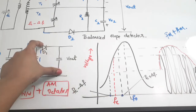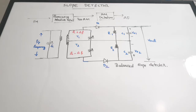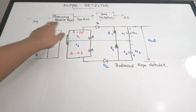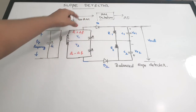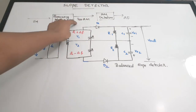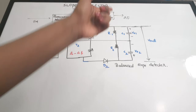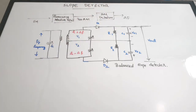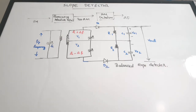Now let us see a more advanced version of this slope detector, which is called the balanced slope detector. We have seen that the basic slope detector has two blocks: a frequency selective network that produces an FM plus AM modulated wave, and then an AM detector that recovers the modulating signal. Now let us see the balanced slope detector, which is also called a frequency discriminator.